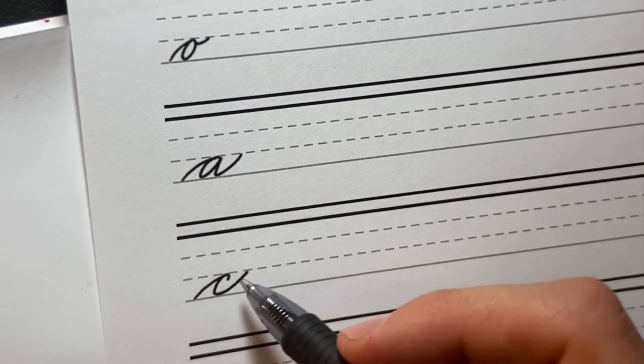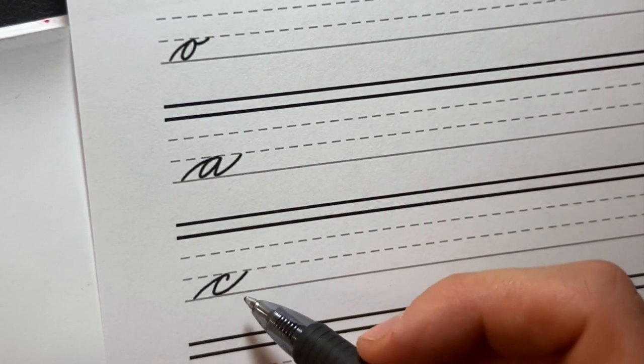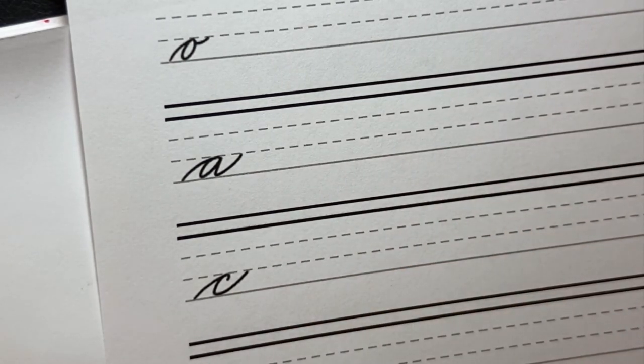These letters go great together. They're all small letters in the sense that they go from the baseline to the X height, and they all feature these oval shapes again.